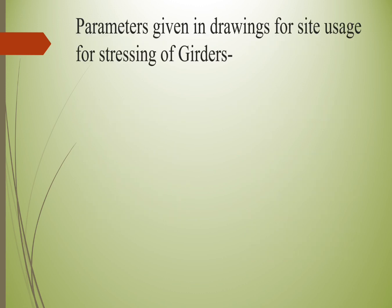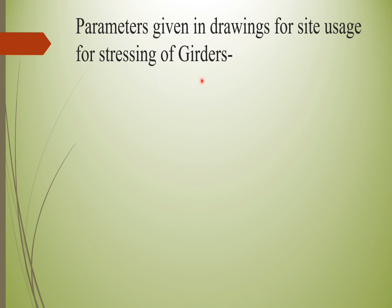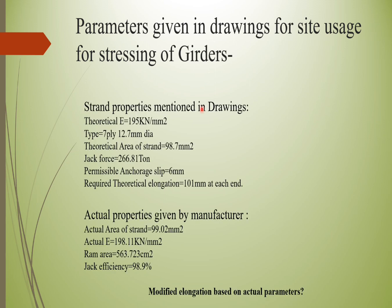Let us consider an example of pre-stressed concrete in which the designer has given the properties of strands, the jacking force required on site, and the elongation to be observed. Since strand properties vary from site to site, we need to compare them with the manufacturer's properties. The strand properties mentioned in drawings are: theoretical modulus of elasticity = 195 kN/mm², strand type = 7-ply 12.7 mm dia, theoretical area = 98.7 mm², jack force = 266.81 tons, permissible anchorage slip = 6 mm, and required theoretical elongation = 101 mm at each end while jacking.